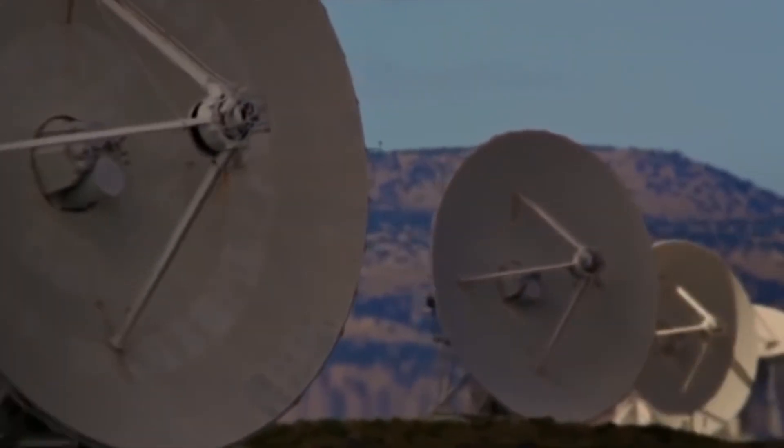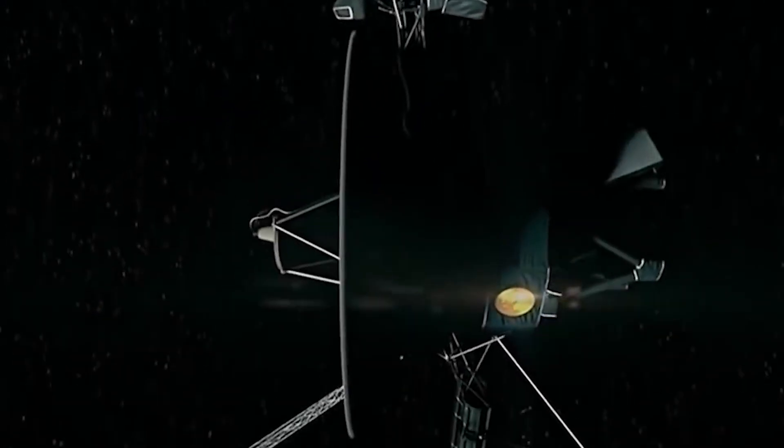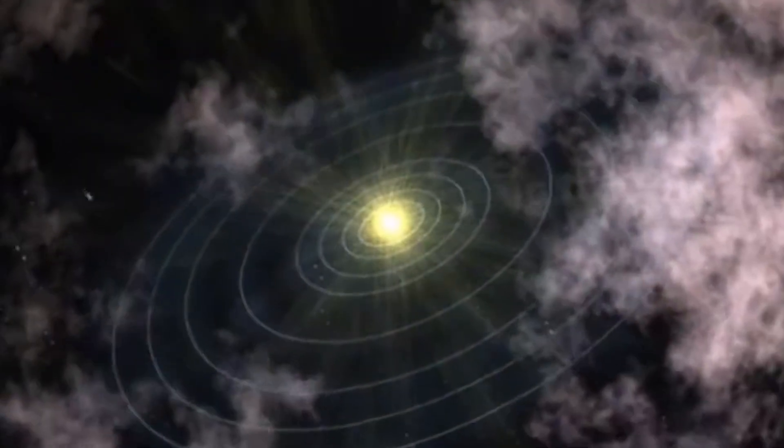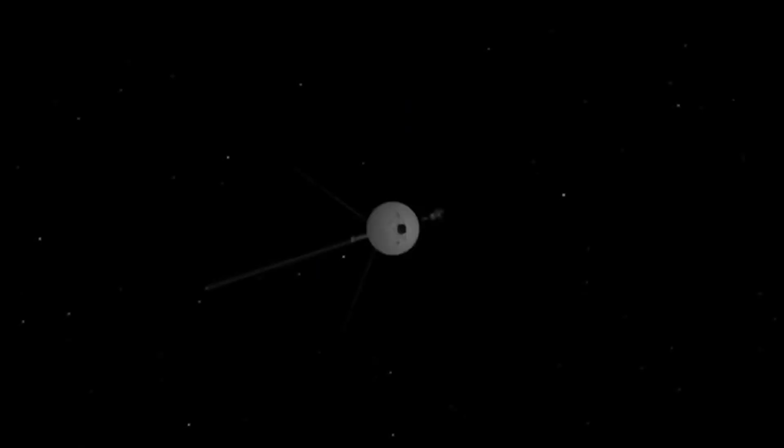Based on this signal, the electron density around Voyager 1 has increased roughly 40-fold since 2013. The spacecraft is moving through regions far more dynamic than anyone imagined. But the plasma wave discovery was just the beginning. What came next would rewrite textbooks.